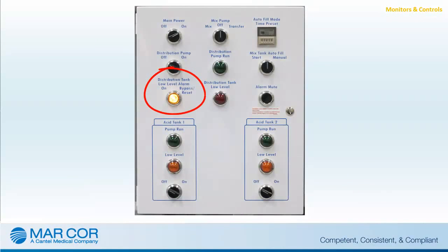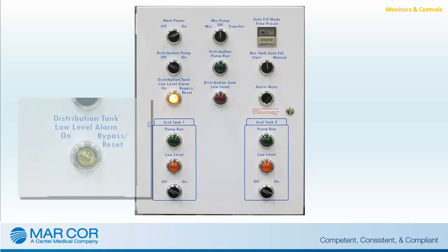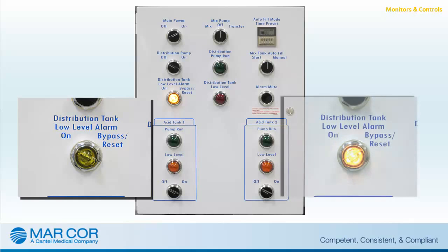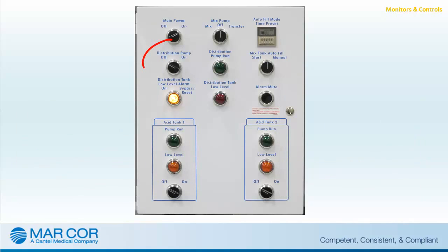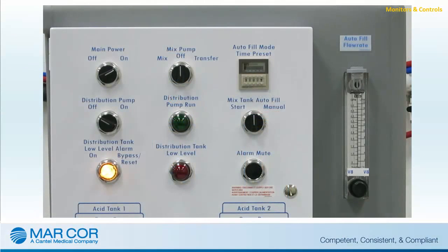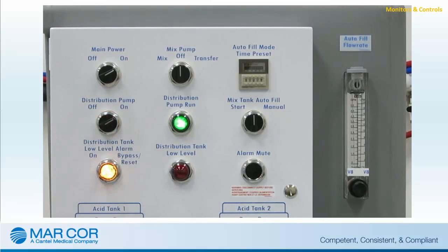The distribution tank low-level hand switch controls the function of the distribution tank low-level alarm. The alarm is enabled when the switch is in the on position. Moving the switch to the bypass reset position disables the alarm and illuminates the switch to provide additional user awareness of the alarm bypass. The distribution pump switch is a two-position switch that controls power to the distribution pump. Moving the distribution pump switch to the on position initiates operation of the distribution pump and illuminates the distribution pump run light.